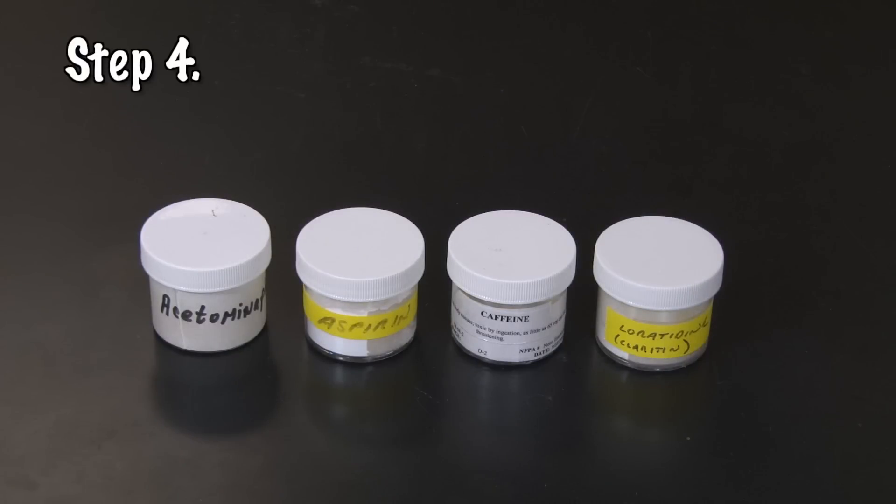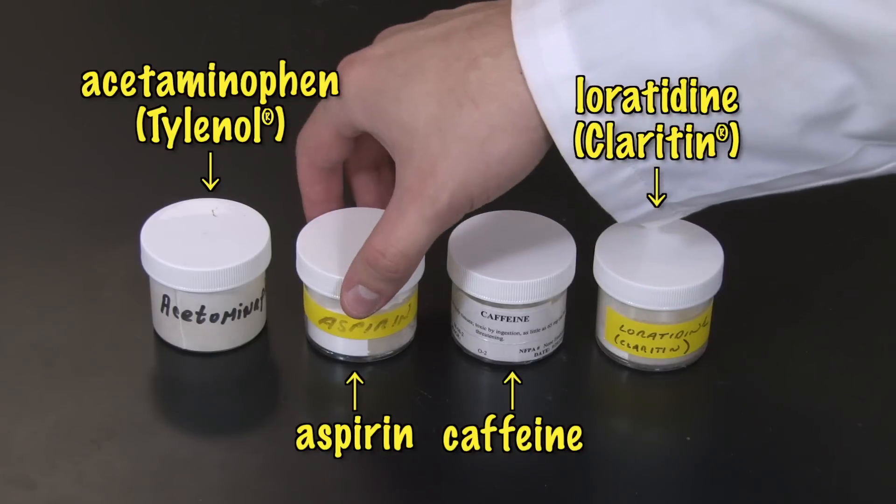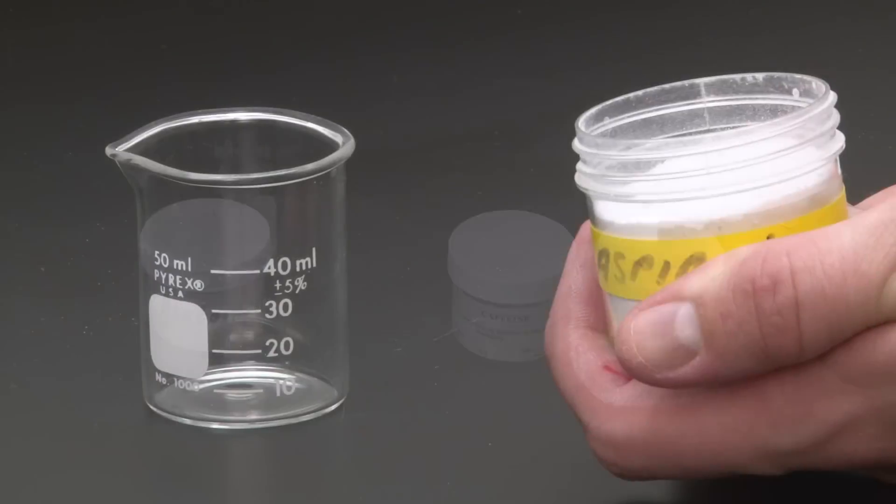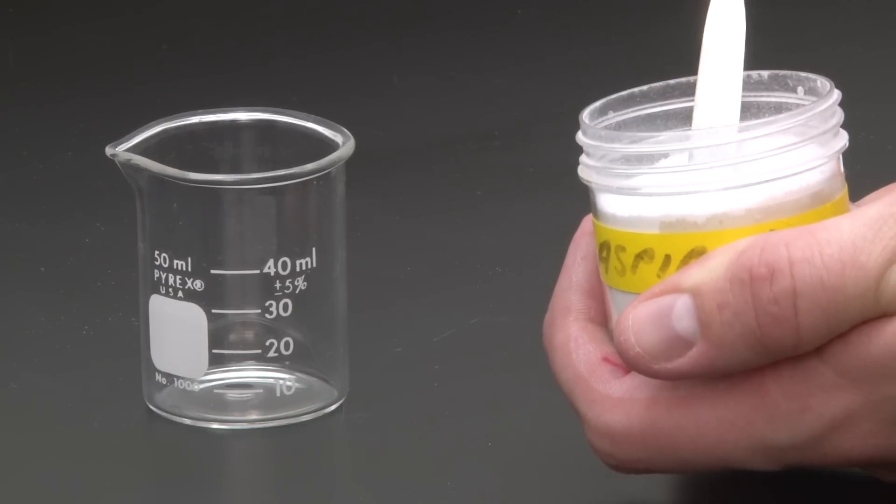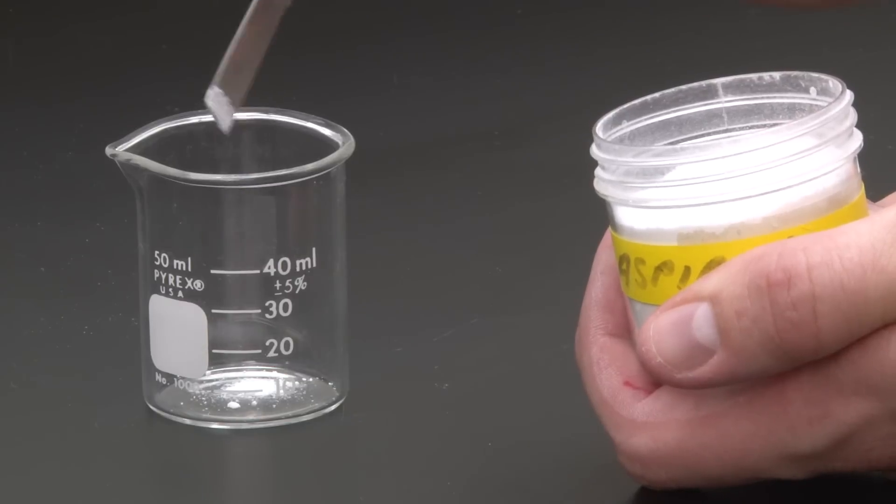Now, obtain a known drug sample. It's just an over-the-counter drug ground into a powder. There are four knowns in this experiment. Choose one of the knowns to prepare, and other groups will prepare the others. Scoop a small amount on the tip of your flat spatula and place it in a clean, dry 50-milliliter beaker.